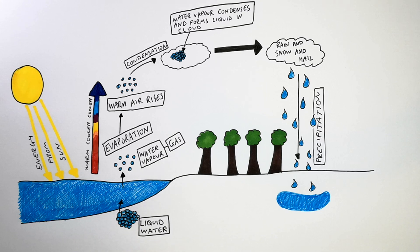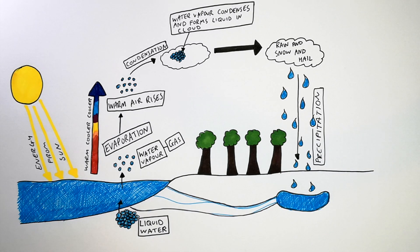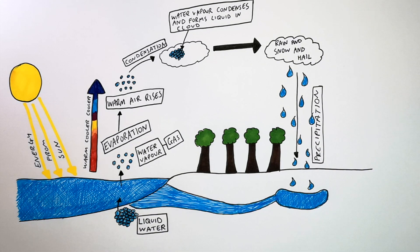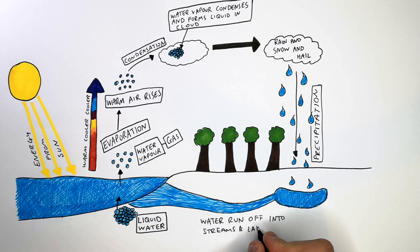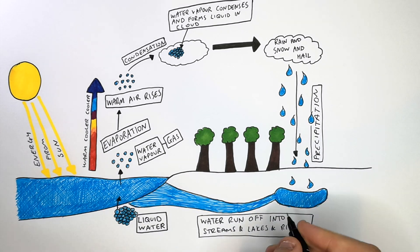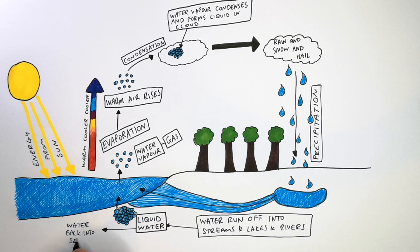Precipitation is going to then transport the water back down to the ground. It will transport it back into the lakes, rivers and also back into the seas. This shows water runoff into the streams, lakes and rivers. This will then potentially go back into the seas and oceans.